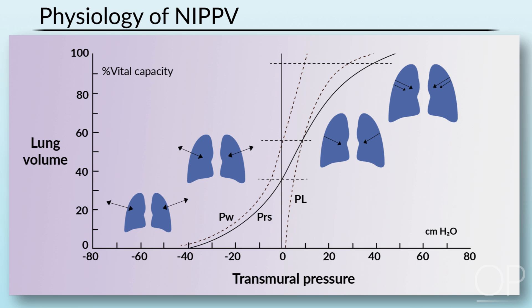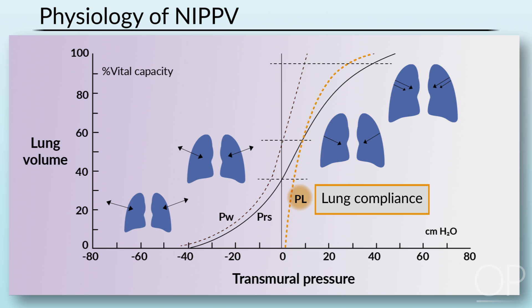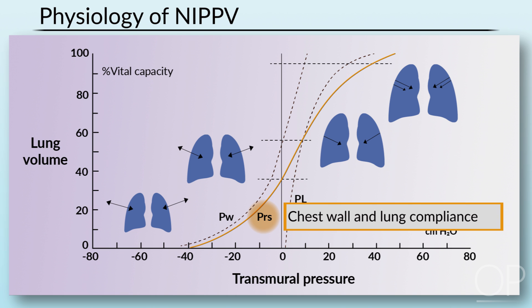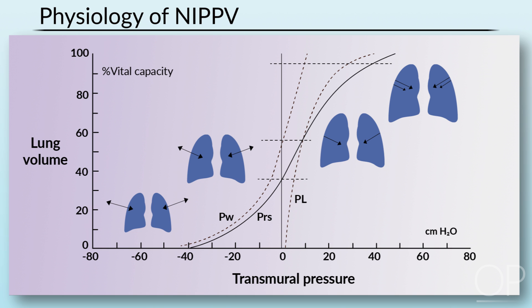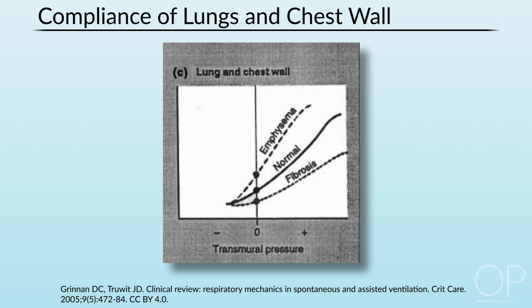Going back to first principles, this graph represents the respiratory system divided into individual components: the lungs, the chest wall, and the combined system. On the x-axis is the transmural pressure, and on the y-axis is lung volume as a percentage of vital capacity. The solid line is the composite of chest wall and lung compliance curves. The important take-home message is that the chest wall favors expansion and the lungs have an intrinsic recoil property that favors collapse. Where these opposing forces are equal, that represents functional residual capacity.